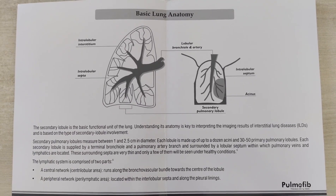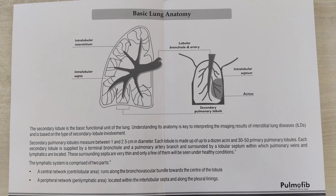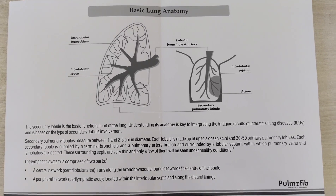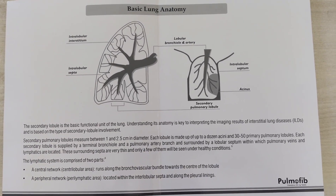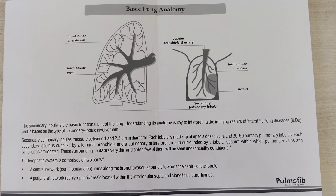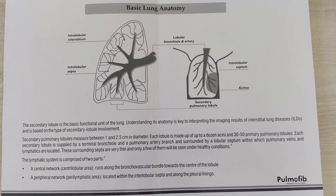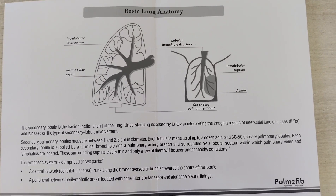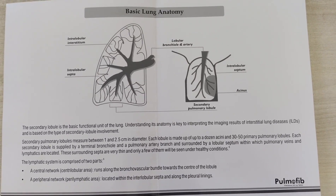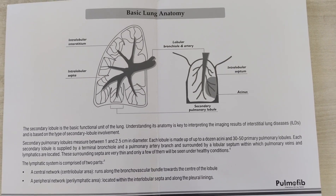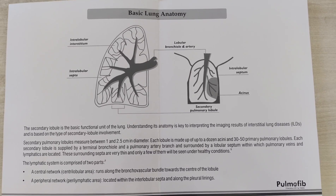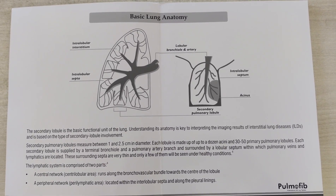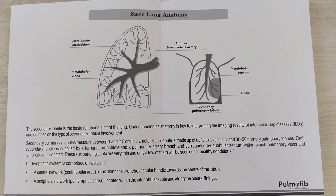Let's learn about basic lung anatomy and the secondary pulmonary lobule. The secondary pulmonary lobule is the basic functional unit of the lung. Understanding its anatomy is the key to interpreting the imaging results of ILDs, and interpretation is based on the type of secondary lobule involvement.